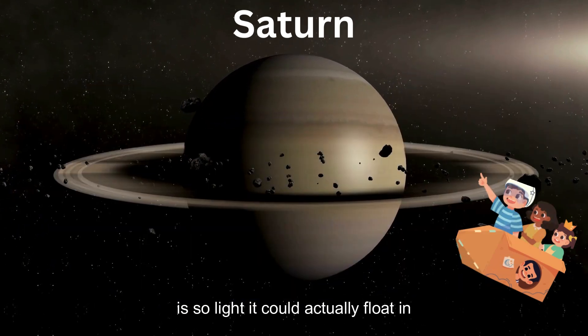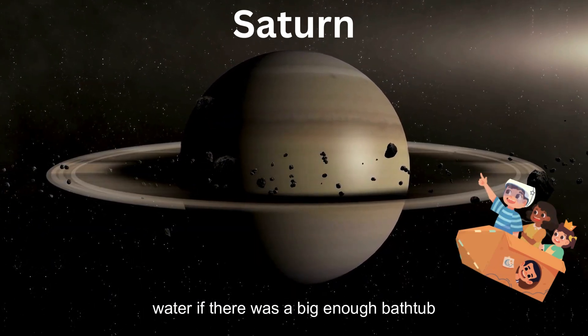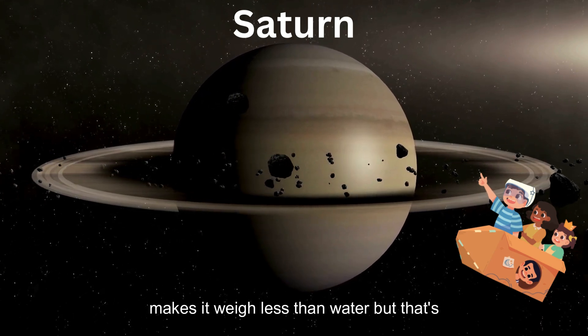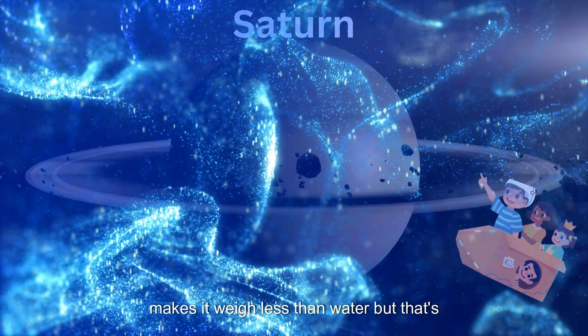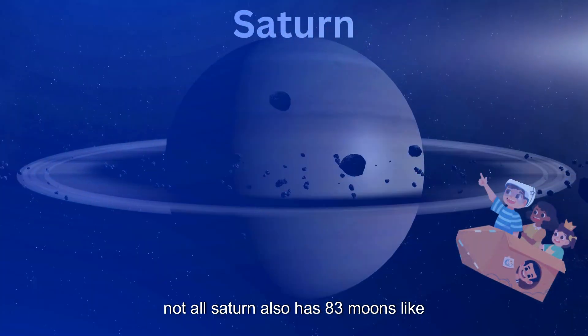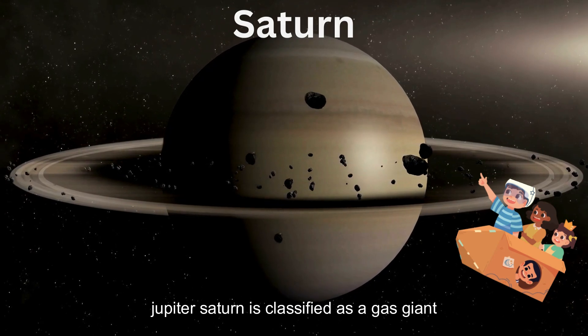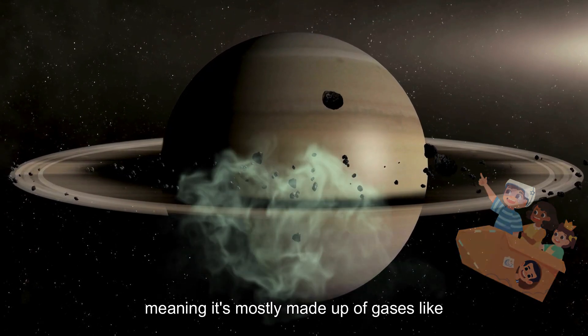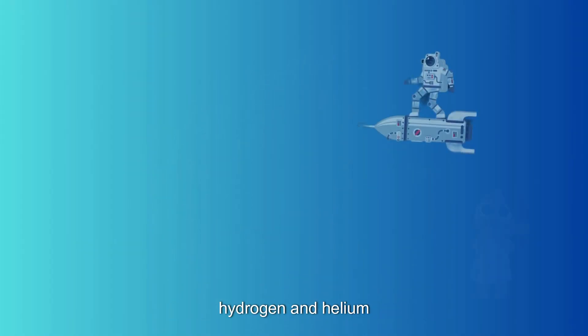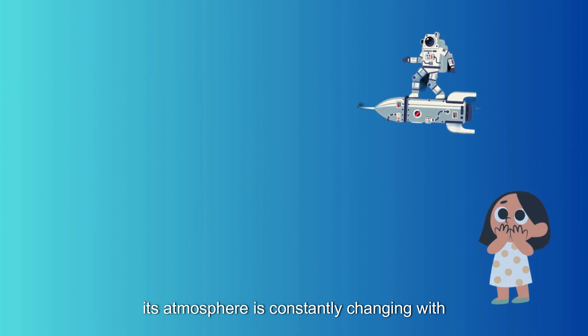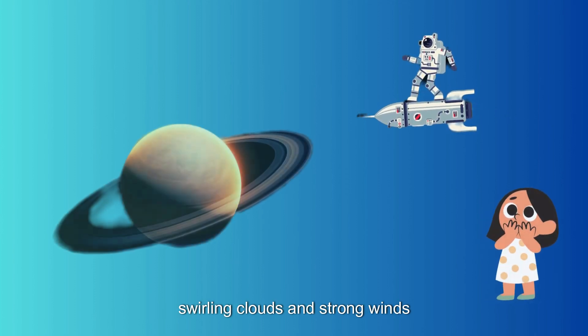That's because it has a low density, which makes it weigh less than water. But that's not all, Saturn also has 83 moons. Like Jupiter, Saturn is classified as a gas giant, meaning it's mostly made up of gases like hydrogen and helium. Its atmosphere is constantly changing, with swirling clouds and strong winds.